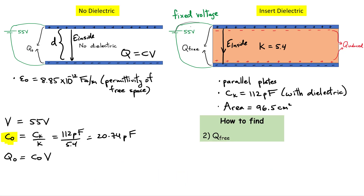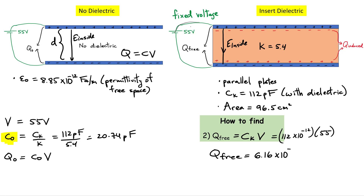The second problem is pretty straightforward — we need the free charge once the dielectric is inserted. Q_free is simply the capacitance CK multiplied by the voltage. The voltage is fixed; it's the capacitance that increased. So Q_free = 112×10⁻¹² F times 55 volts, which gives approximately 6.16×10⁻⁹ coulombs, or 6.16 nanocoulombs. That's the free charge on the plates.